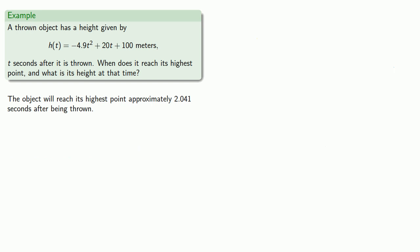Now since we are given a function for determining the height of the object, once we know t, to find the height, let t equal 2.041. So our function tells us the height when we substitute t equal to 2.041.